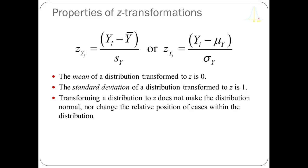We're going to go from one scale to another. Our original scale might be something like how old you are in years, and the output variable will be how old you are in Z-score units. When I say this is a linear transformation, we're really not changing any of the numerical information contained in the variable — we're simply converting it to a different scale. It's very similar to comparing temperature in centigrade to temperature in Fahrenheit.